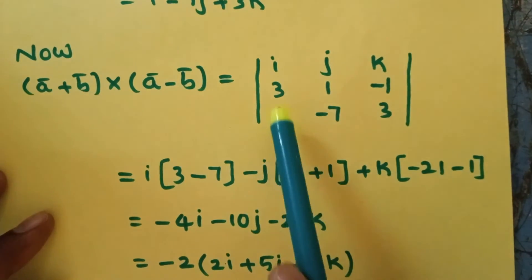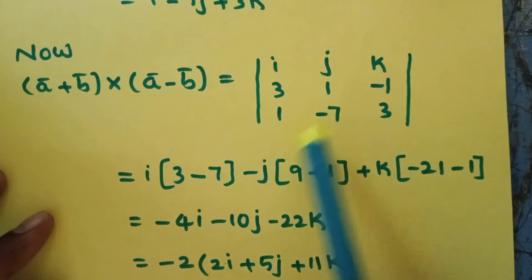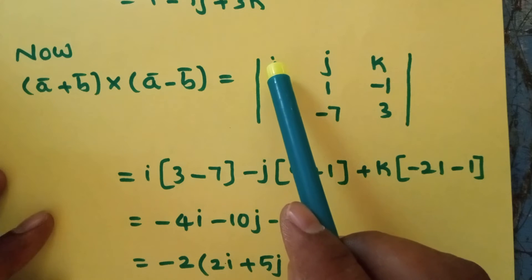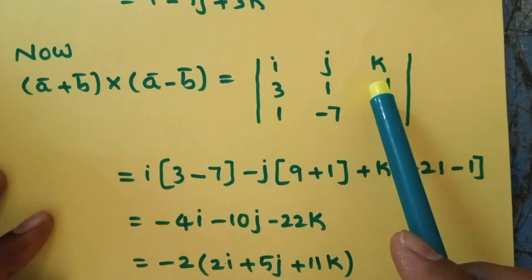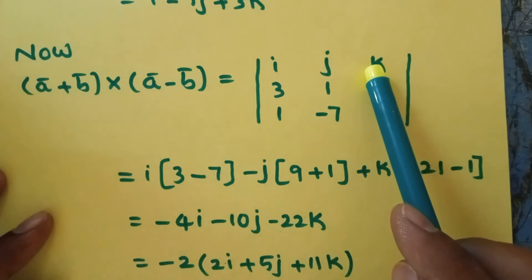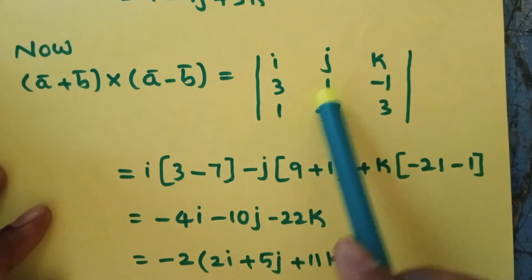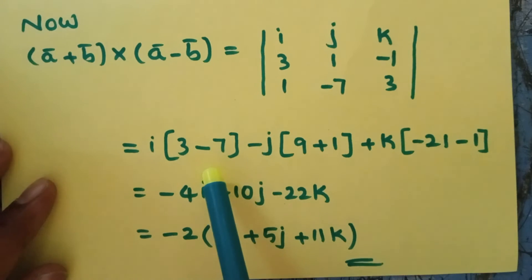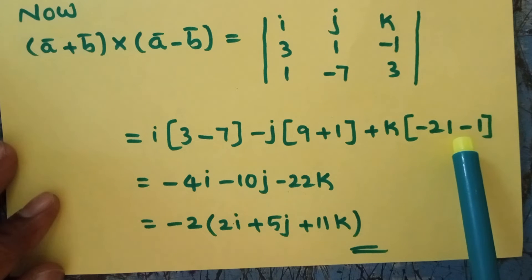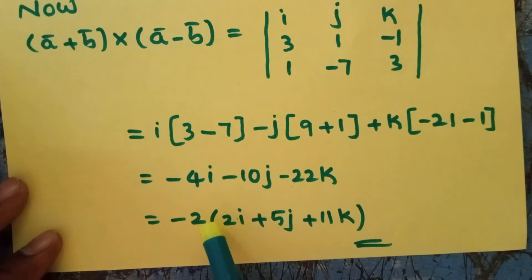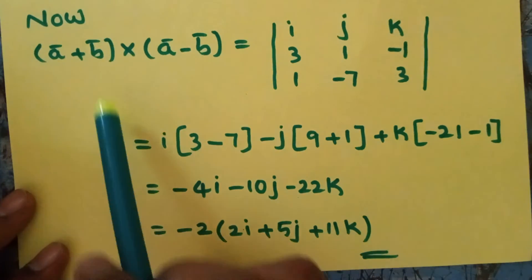On simplifying this determinant: i of (1 into 3 gives 3, minus minus 1 into minus 7 gives 7), so i of (3 minus 7) gives minus 4i. Next, minus j of (3 into 3 gives 9, minus minus 1 into 1 gives plus 1), so minus j of 10 gives minus 10j. Next, plus k of (3 into minus 7 gives minus 21, minus 1 into 1 gives 1), so k of minus 22 gives minus 22k. From this, taking minus 2 common, we get minus 2 of (2i plus 5j plus 11k). This is the value of (A plus B) cross (A minus B).